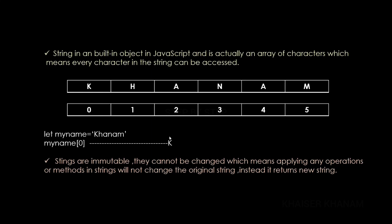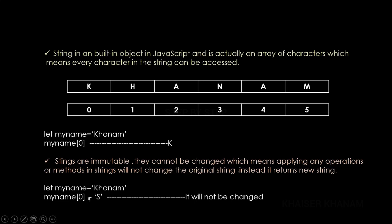Strings are immutable, which means we cannot change them. Whatever operations or methods we apply to a string, we will not be changing the original string — instead we will get a new string. For example, if I try to update the letter at position zero from 'k' to 's', it will not be changed. If I apply substring or reverse, it will just return a new string while the original string stays as it is.